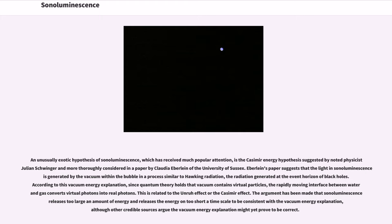An unusually exotic hypothesis of sonoluminescence, which has received much popular attention, is the Casimir energy hypothesis suggested by noted physicist Julian Schwinger and more thoroughly considered in a paper by Claudia Eberlein of the University of Sussex. Eberlein's paper suggests that the light in sonoluminescence is generated by the vacuum within the bubble in a process similar to Hawking radiation, the radiation generated at the event horizon of black holes. According to this vacuum energy explanation, since quantum theory holds that vacuum contains virtual particles, the rapidly moving interface between water and gas converts virtual photons into real photons. This is related to the Unruh effect or the Casimir effect. The argument has been made that sonoluminescence releases too large an amount of energy and releases the energy on too short a time scale to be consistent with the vacuum energy explanation, although other credible sources argued the vacuum energy explanation might yet prove to be correct.